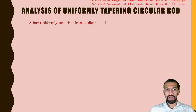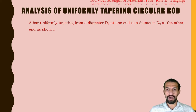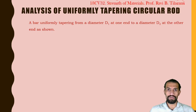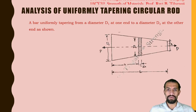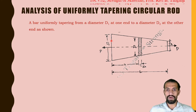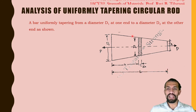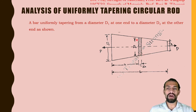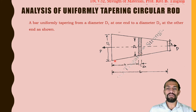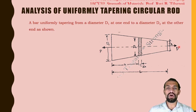A bar uniformly tapers from a diameter D1 at one end to a diameter D2 at the other end as shown in the figure. D1 is diameter 1, D2 is diameter 2, and the length of the tapering circular rod is capital L. We consider an elemental diameter dx at a distance x from the left end, with the whole section having a tension force P acting on both ends.